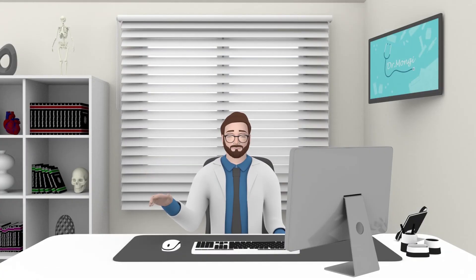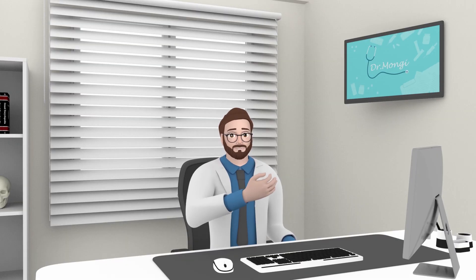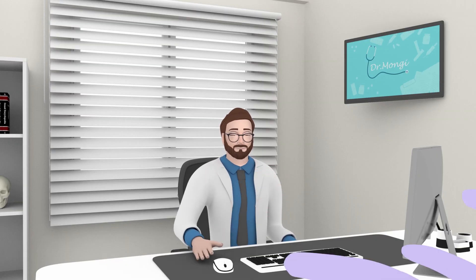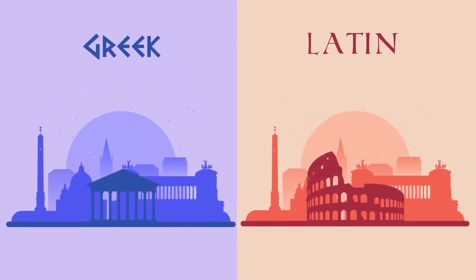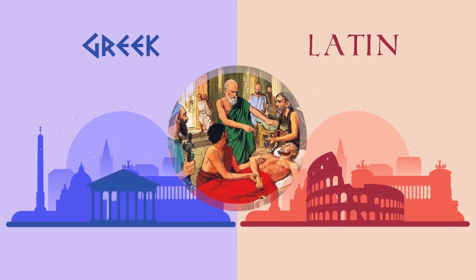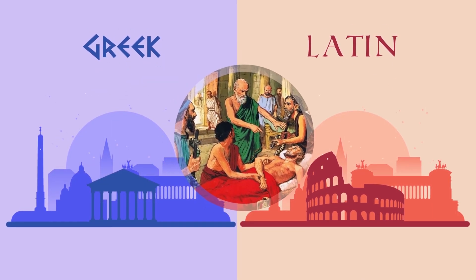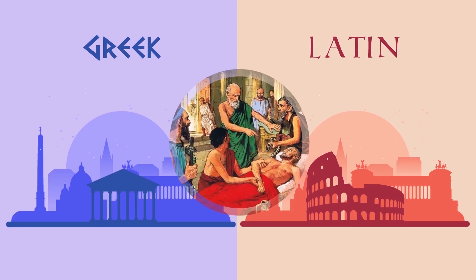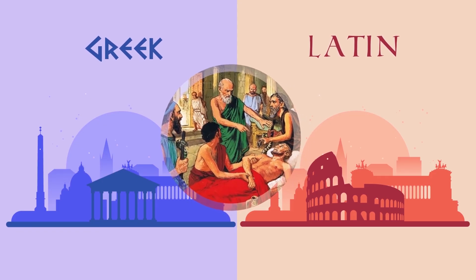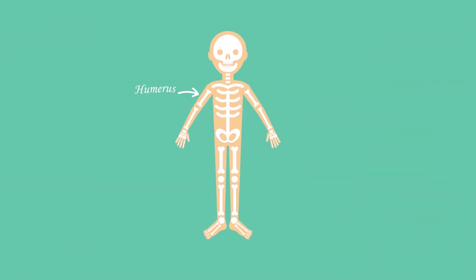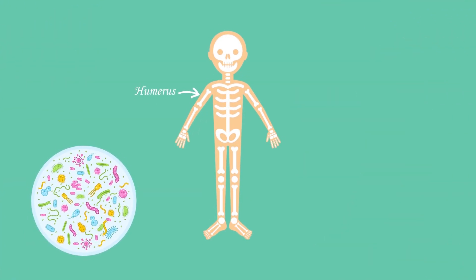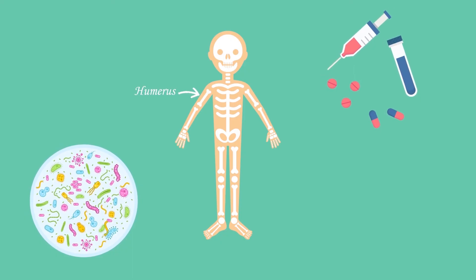Hello everyone and welcome. In this lesson we are going to talk about the components of medical terms. Medical terms generally derive from the early Greek and Latin languages, because in ancient times both the Romans and the Greeks advanced the study and practice of medicine. They named anatomical structures, diseases, and treatments in their own languages.